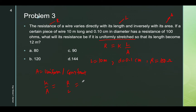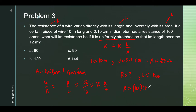With R equal to 100 and length equal to 10, K over A equals 10 ohms per meter. When the length is 12 meters, R equals K over A times L, so 10 times 12 equals 120 ohms. Therefore the answer is letter D.